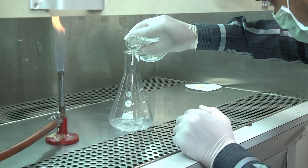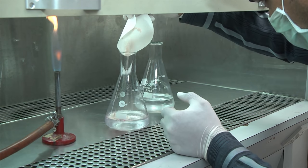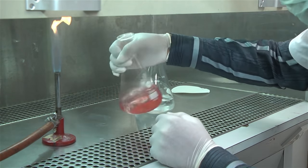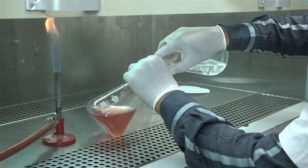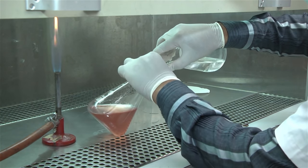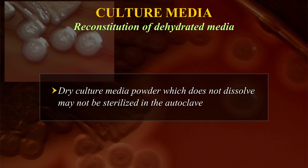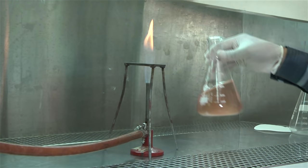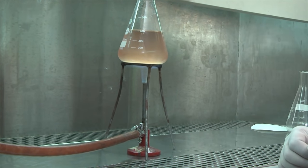Pour half the required volume of distilled water in the vessel, then add the weighed quantity of medium, mixing briskly for a few minutes. Pour the rest of the distilled water down the sides of the vessel to wash away any medium sticking to the sides back into the solution. This is important as dry culture media powder which does not dissolve may not be sterilized in the autoclave and can be a source of contamination. Media containing agar should be heated first to completely dissolve the agar before autoclaving.